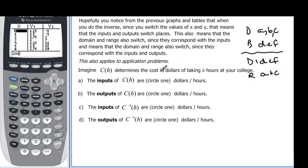It also applies to applications. So imagine that C(h) determines the cost in dollars of h hours at your college. So the inputs of C(h) are, remember it's a cost function in h hours. So this h is going to be our hours in our function. And the outputs are the amount of dollars that we have to pay. Well, remember now we just talked about the fact that the domains and ranges are going to switch. So they mean the opposite things. C inverse of h is actually going to be an hours equation and h is actually going to mean dollars. So the inputs are now dollars and the outputs are hours.